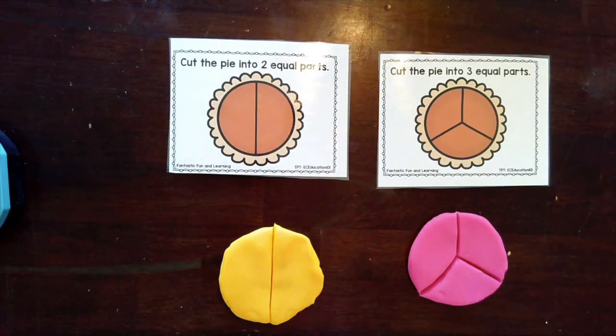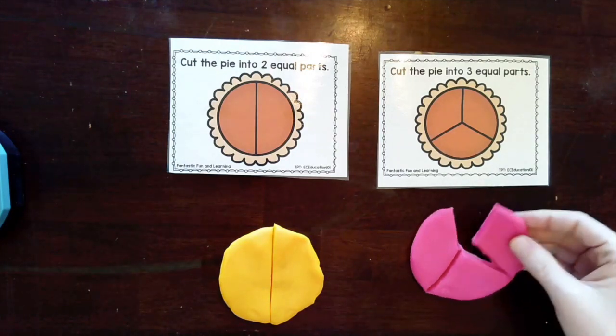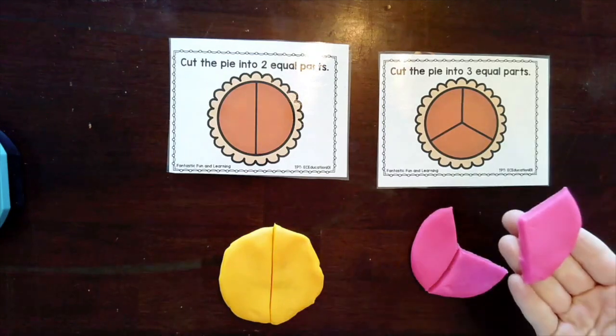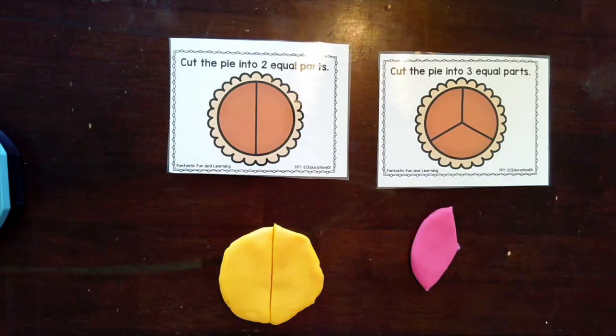There we go. So this whole is cut into thirds. If I take one away I've taken away one third, or two thirds, or the whole thing.